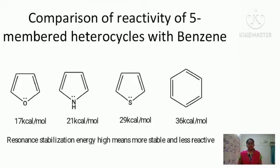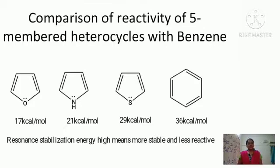The resonance stabilization energy of furan is 17 kcal/mol, pyrrole is 21 kcal/mol, thiophene is 29 kcal/mol, and benzene is 36 kcal/mol. If the resonance stabilization energy is high, the compound is highly stable — it is the most stable aromatic structure — and that means it is least reactive. Furan's resonance stabilization energy is the least, meaning it is least stable and therefore most highly reactive.